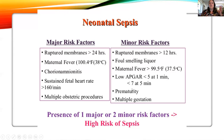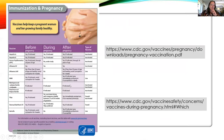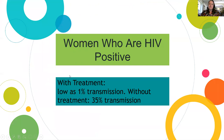Regarding immunizations in pregnancy, there's a recommended list of vaccines that can and cannot be given during pregnancy — know which ones and why they cannot be given. For women who are HIV positive, with proper antiviral treatment during pregnancy, delivery, and post-delivery — including treating the newborn — transmission can be as low as 1%. Without treatment, transmission is about 35%.